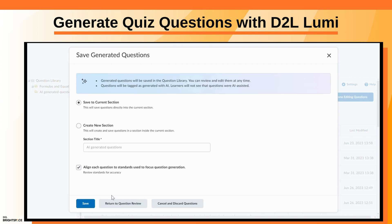Select Save to Current Section or select Create New Section to create a new section. Then click Save.